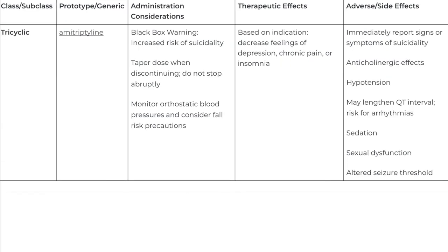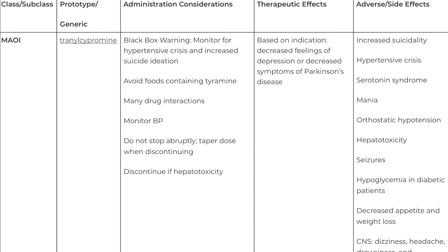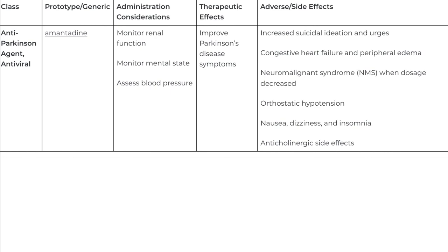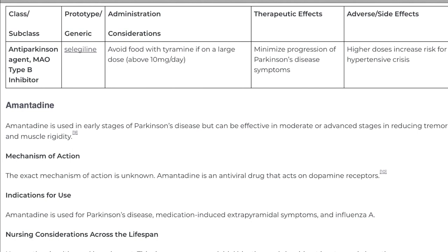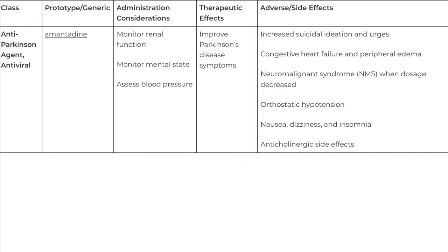Delusions fall into several categories. Individuals with a persecutory delusion may believe they are being tormented, followed, tricked, or spied on. Individuals with a grandiose delusion may believe they have special powers. Individuals with a reference delusion may believe that passages in books, newspapers, television shows, song lyrics, or other environmental cues are directed toward them. In delusions of thought withdrawal or thought insertion, individuals believe others are reading their mind, their thoughts are being transmitted to others, or outside forces are imposing their thoughts or impulses on them.